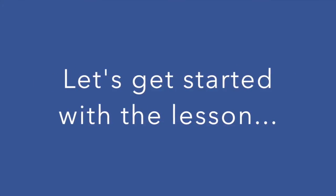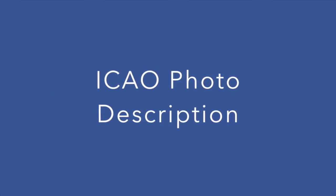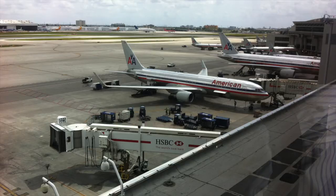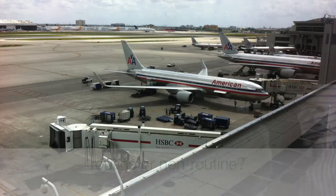Now, let's get into today's lesson. Today's lesson is another ICAO photo description. This is a task that is common on ICAO testing worldwide. In this photograph, we have a routine situation, and it's important when you're describing your picture to let the examiner know if this is a routine or non-routine situation.